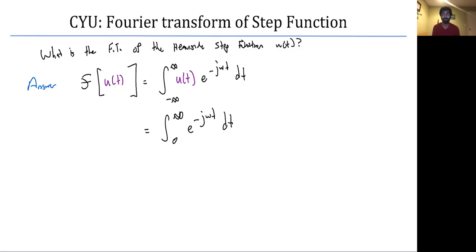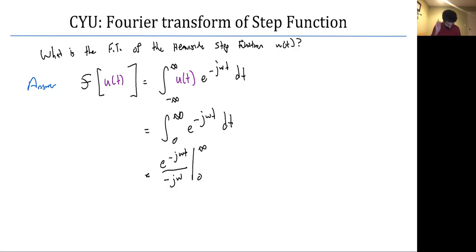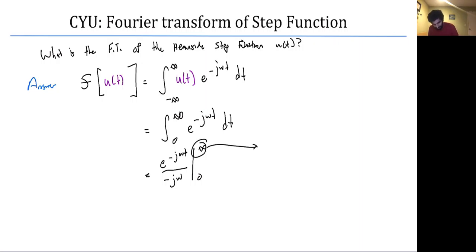This should look familiar. Many would compute e to the minus j omega t over minus j omega evaluated from zero to infinity. But there are problems: this integral doesn't converge. If I put in infinity for time, I get zero divided by minus infinity — it doesn't converge. So the plug-and-chug approach fails here too.